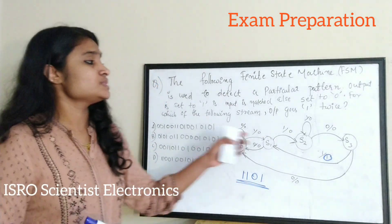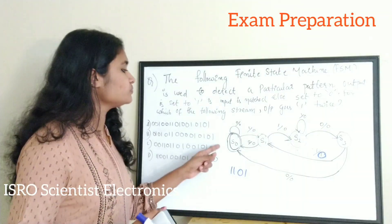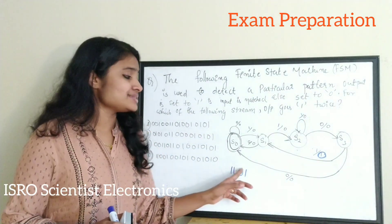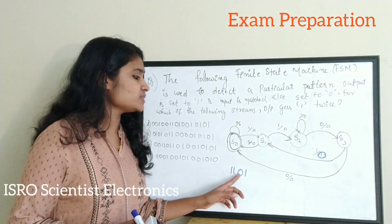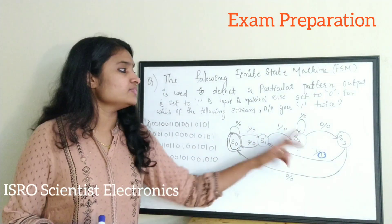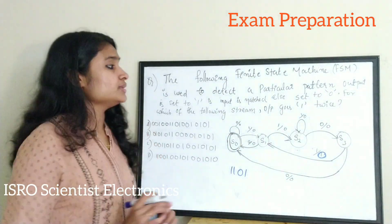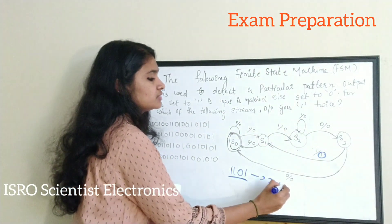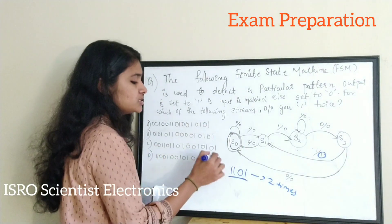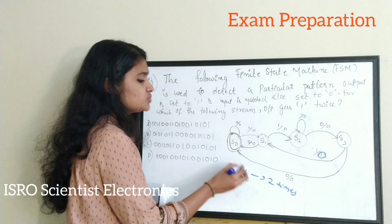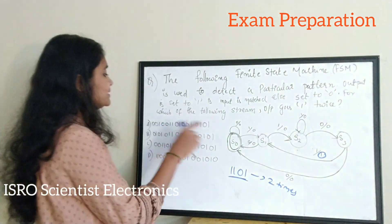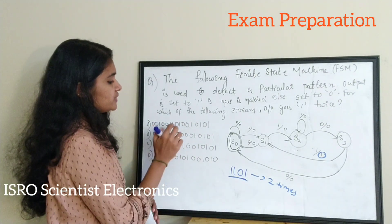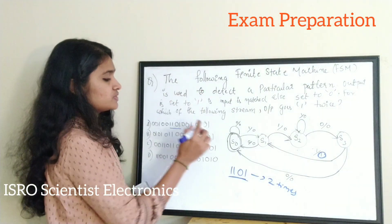So the sequence detector is detecting the pattern 1 1 0 1. We need to find which of the 4 streams contains 1 1 0 1 exactly twice, since the detector will produce output 1 each time that pattern occurs. Checking the first stream: there is one occurrence of 1 1 0 1 but not a second one, so that is not the answer.